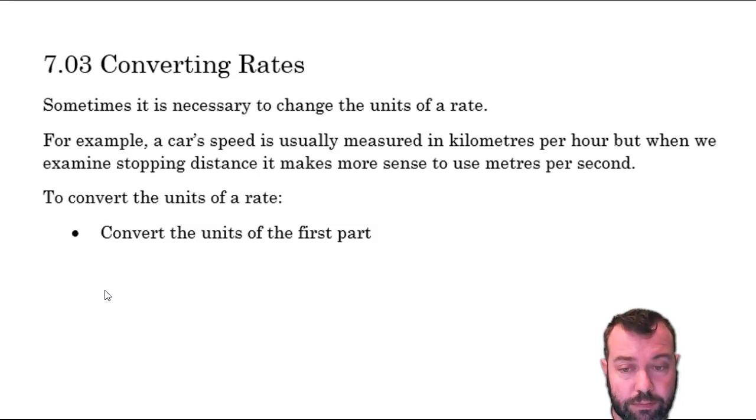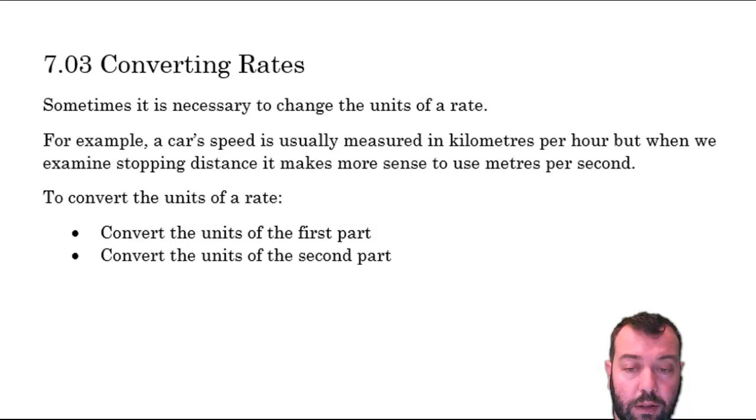The first is convert the units of the first part, so kilometres per hour convert the kilometres to whatever our new unit is. Then we convert the unit of the second part, so again if we're working with speed from kilometres per hour to metres per second, the second part is the time.